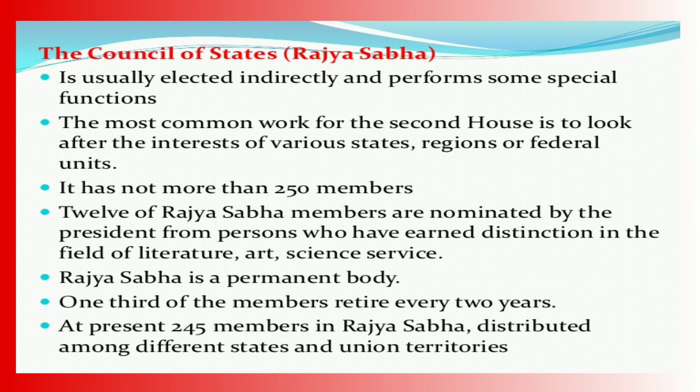Second, the Council of States, also known as Rajya Sabha, is usually elected indirectly and performs some special functions. Its most common work is to look after the interests of various states, regions, and federal units. It has not more than 250 members. Twelve Rajya Sabha members are nominated by the President from persons who have earned distinction in the fields of literature, art, science, service, etc.